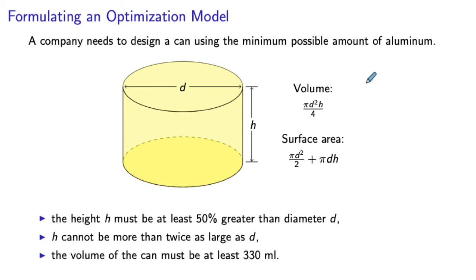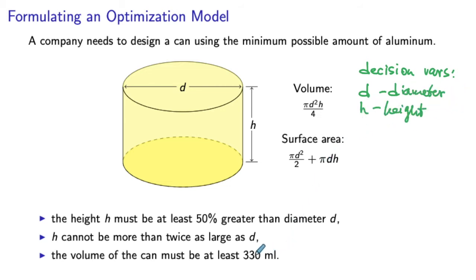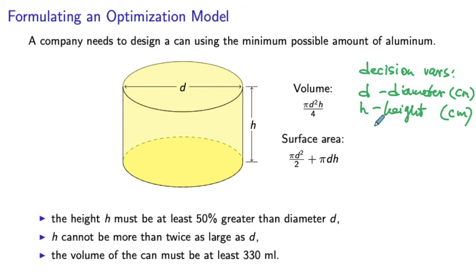Our decision variables are d and h, and we need to decide the appropriate units of measure. Since volume is measured in milliliters and one cubic centimeter corresponds to one milliliter, it makes sense to measure diameter and height in centimeters. When specifying decision variables, we also specify their type — real or integer. Since height and diameter can be fractional, these are real variables. Moreover, neither can be negative, so they are real non-negative variables.